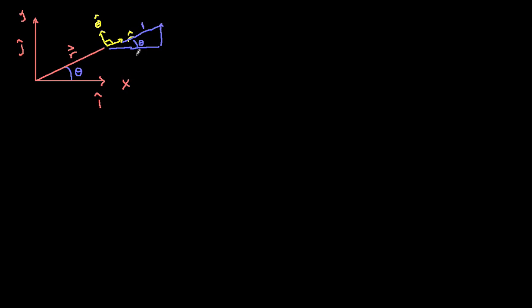We want r hat to equal one. In fact we can write down r hat has to equal cosine theta in the i hat direction, that's what this amount is. If this is one, then cosine of theta is this length in the i hat direction plus sine theta in the j hat direction.